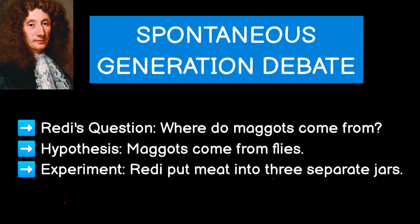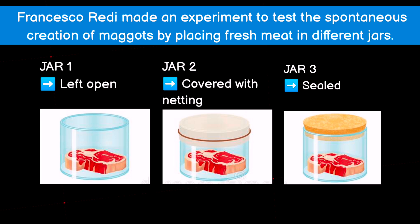Redi's question was: where do maggots come from? His hypothesis was that maybe maggots come from flies. He then conducted an experiment, placing meat into three separate jars. The first jar was left open, the second jar was covered with netting, and the third jar was completely sealed.